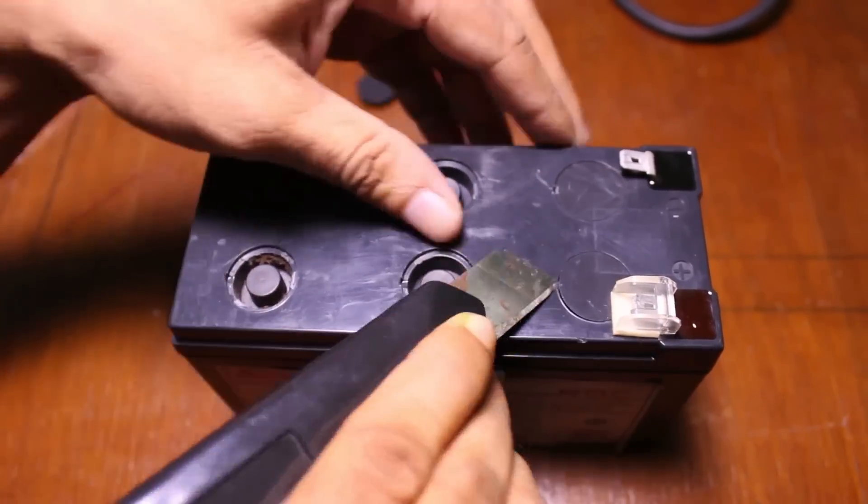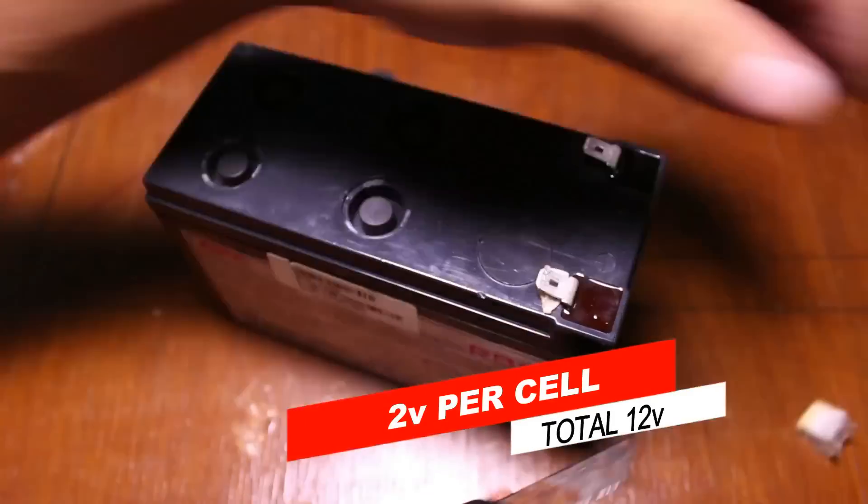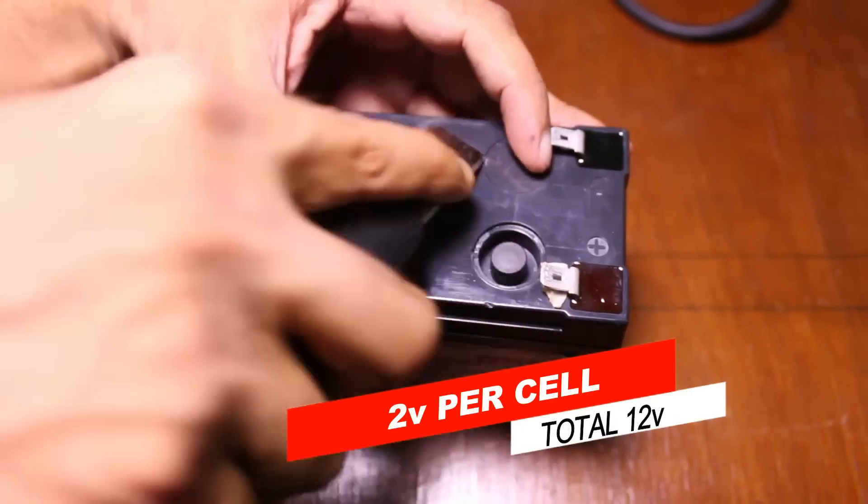Remove every cap. Each cell voltage is 2V, so 2 x 6 is 12 volts. So this is a 12 volt battery.